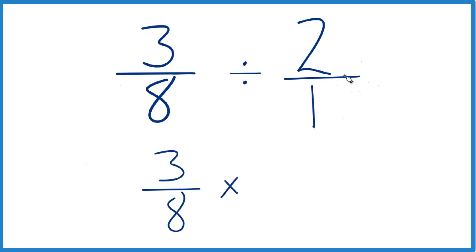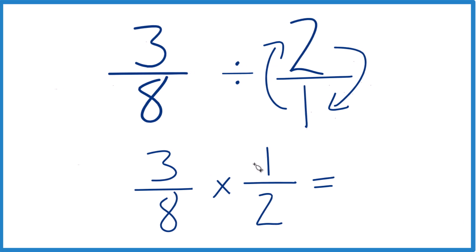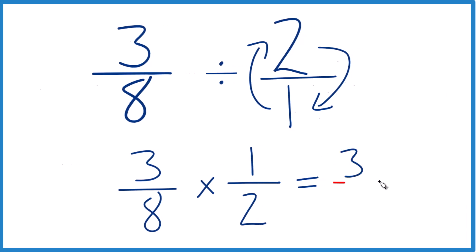So you take the two, the numerator, move it down to the bottom; denominator comes to the top. So one over two, so one-half. Now with fractions, it's a little bit easier to do because we take three times one—we multiply the numerators, then multiply the denominators. Eight times two is sixteen.